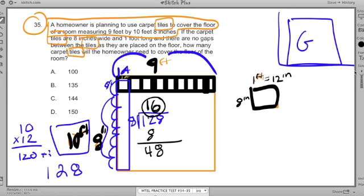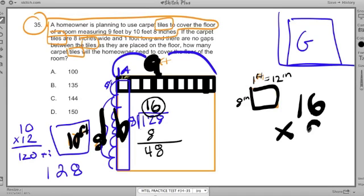So we've got something that's 9 tiles by 16 tiles, 9 by 16. How many tiles are there? Well, now I've got to do this type of multiplication.